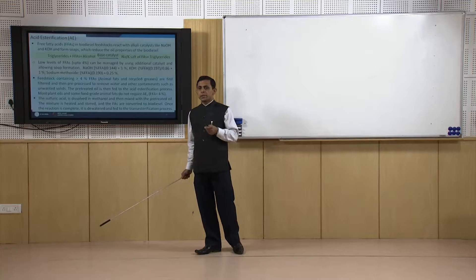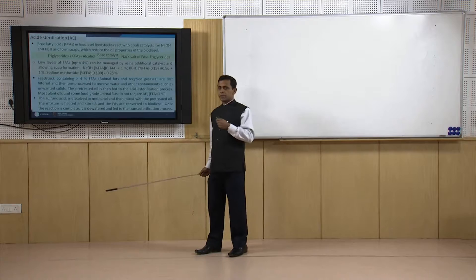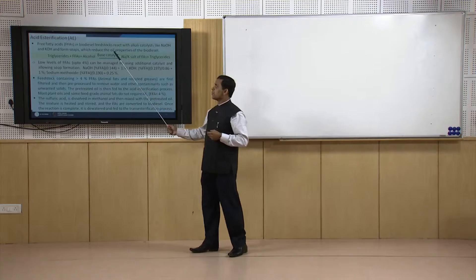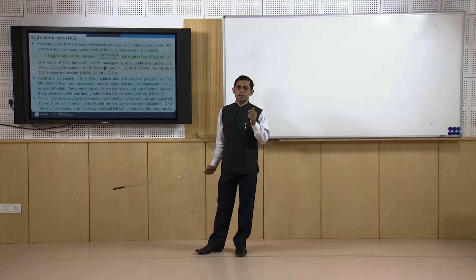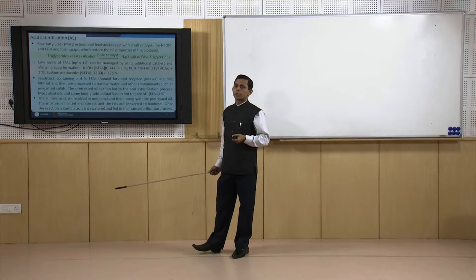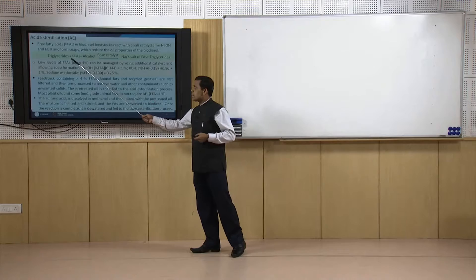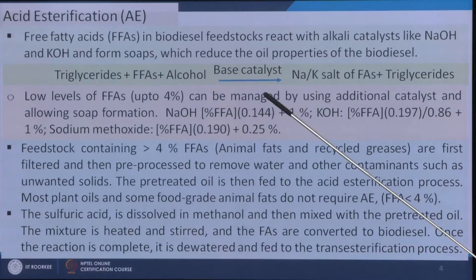In this step the target is basically to remove free fatty acids if present in the oil feedstocks. If free fatty acids are available in bio-oil or any other organic waste, those free fatty acids react with NaOH or KOH if a base catalyst is used. The free fatty acids react with the alkali and are converted to sodium or potassium salts of these fatty acids, which are also called soap. This soap reduces the quality of the biodiesel. As the reaction takes place — triglycerides plus free fatty acids plus alcohol under a base catalyst — it forms sodium or potassium salts of free fatty acids. This is not desirable.